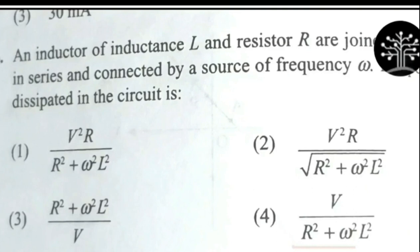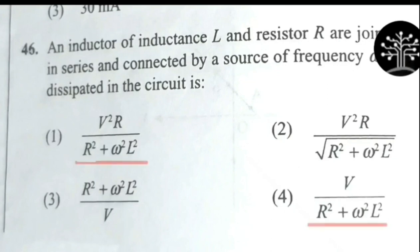The first question is question number 46 - an inductor of inductance L and resistance R joined together. The question asks about frequency-related power. An important thing: one KCT student last year used a trick on this question and got the correct answer, but make sure you first read the question carefully before applying any trick. You should at least have a glance at the question before applying the method.